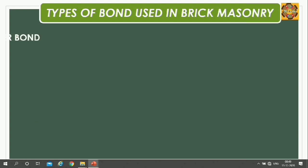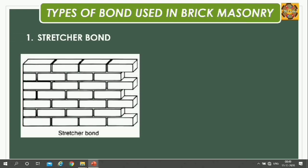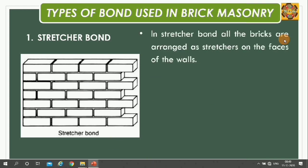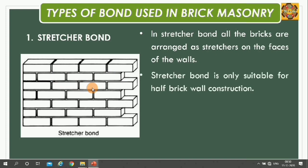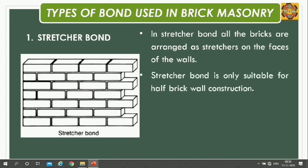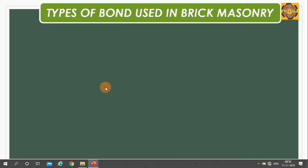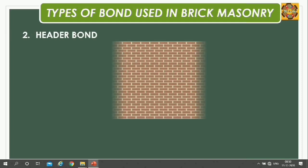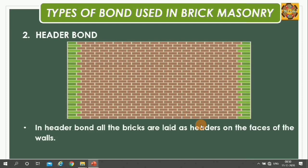Now we will see the types of bond used in brick masonry. The first is Stretcher Bond. In stretcher bond, all the bricks are laid as stretchers on the faces of the wall. Stretcher bond is only suitable for half-brick wall construction. All bricks are laid in stretcher courses, but care should be taken to break the vertical joints.